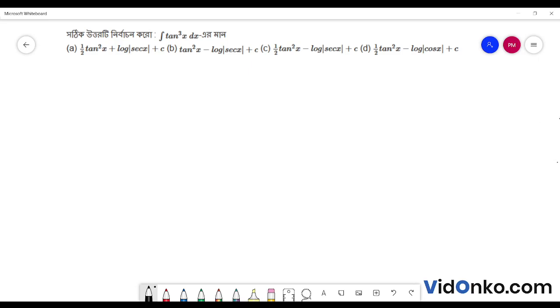Option c is half tan squared x minus log sec x plus c. Option d is half tan squared x minus log cos x plus c.